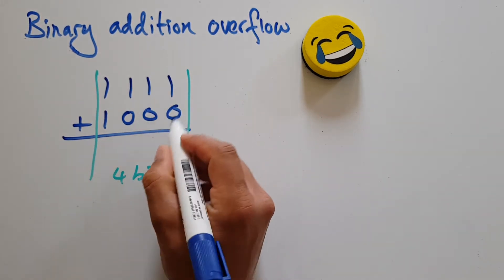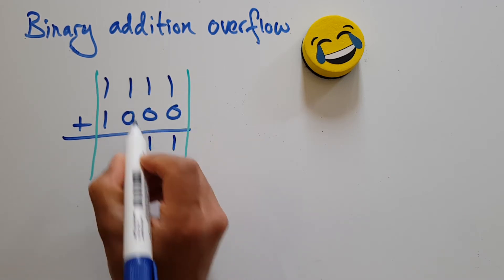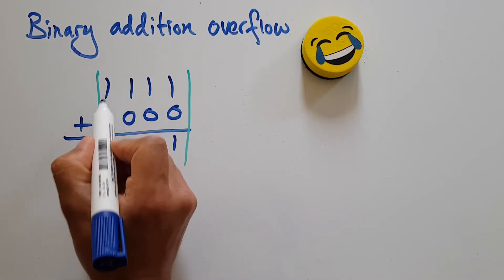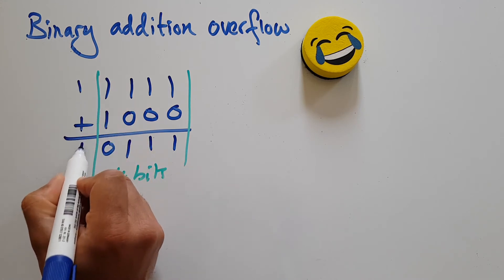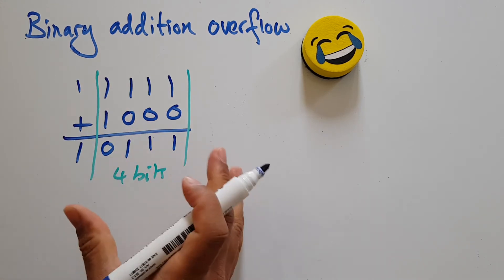Let's do the math. One plus nothing, that's a one. One plus nothing, that's a one. One plus nothing, that's one. One plus one, I drop a zero and wait a minute, I carry a one and that has to drop down. So now I've got an overflow error.